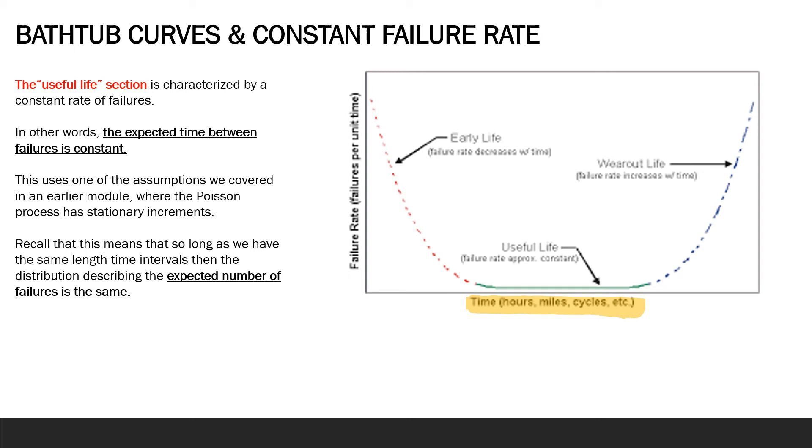So in the very early stages we have a period of system improvement where we're finding and fixing failure modes. So the failure rate decreases with time because typically when you're correcting failures and fixing things you'd expect the system to improve. So the failure rate is decreasing as time goes on.